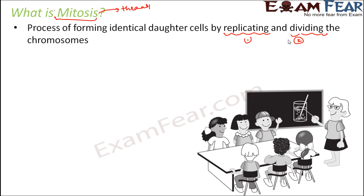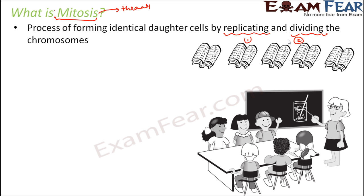You can understand the process of mitosis with this simple example. Suppose a teacher is teaching a class with about six students. She wants to distribute her notes but has only one copy. So what will she do? She will get a Xerox done of the same notes — make multiple copies and then distribute each copy to each student. She replicated, that is she copied, made multiple copies of the original document, and then divided it amongst all the students. Similar is the concept of mitosis: the DNA gets replicated, more copies of DNA are formed, and then it is divided to the daughter cells.